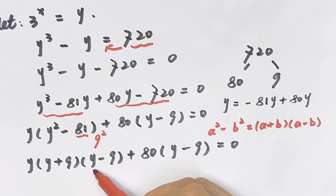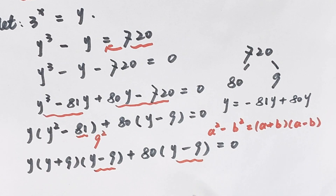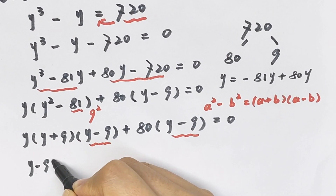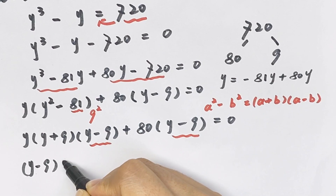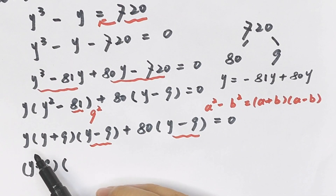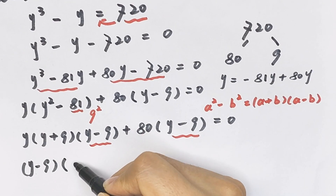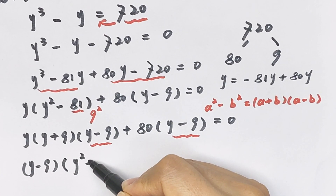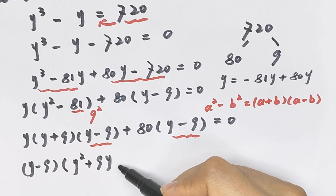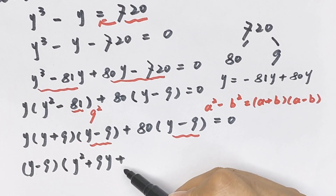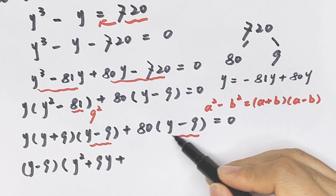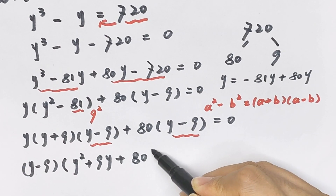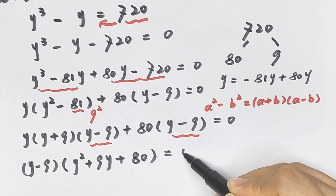Now (y minus 9) is a common factor, so we take (y minus 9) out of the bracket, giving (y minus 9) times (y² plus 9y plus 80) equals 0.